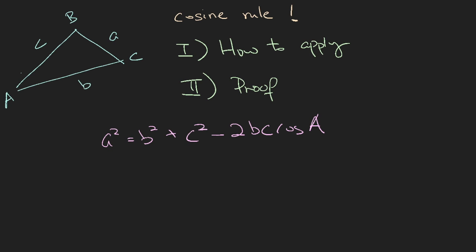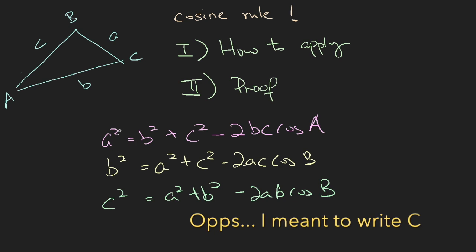This is convenient. Now, alternatively, because you can rename a, b, and c, you can have b² equals a² plus c² minus 2ac cosine B. And naturally, you will have the third one, which is c² equals a² plus b² minus 2ab cosine C. Now I'm not sure whether you can see this, but so long as we can prove one of the identities, the other two is the same.